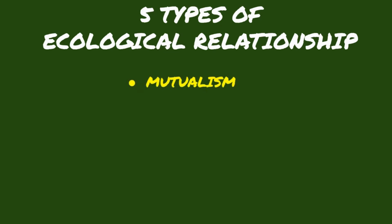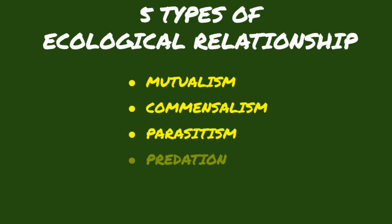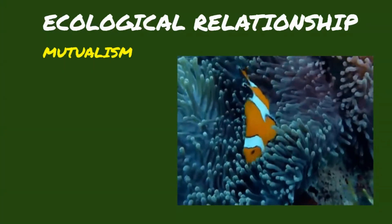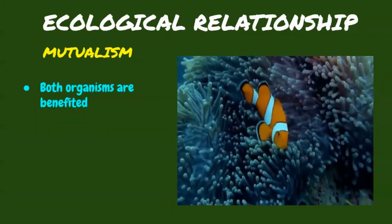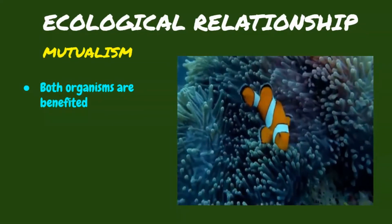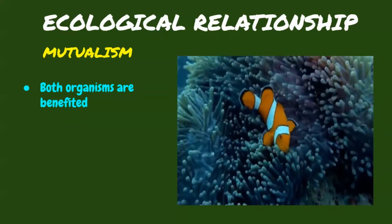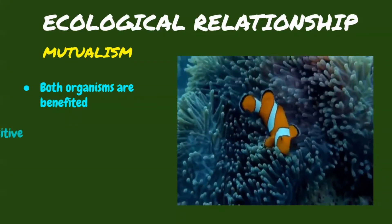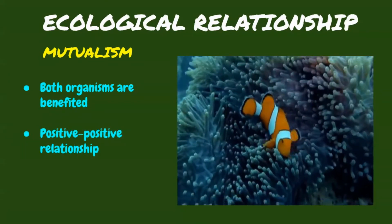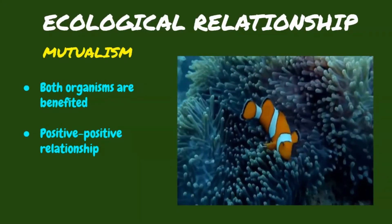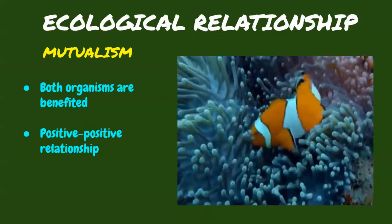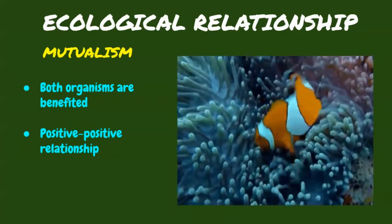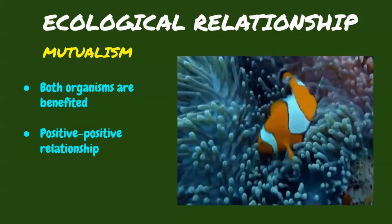There are five types of relationships that exist in an ecosystem, namely: mutualism, commensalism, parasitism, predation, and competition. Let's start first with mutualism. Mutualism is an ecological relationship where both organisms are benefited. It plays an important role in the growth, reproduction, and survival of the organisms, and in maintaining the balance of the ecosystem. It exhibits a positive-positive relationship. An example is the relationship between clownfish and sea anemones. The clownfish provide the sea anemones nutrients in the form of waste, while also scaring off potential predator fish, while the sea anemones provide the clownfish protection and shelter.